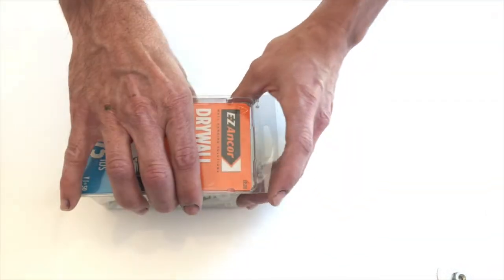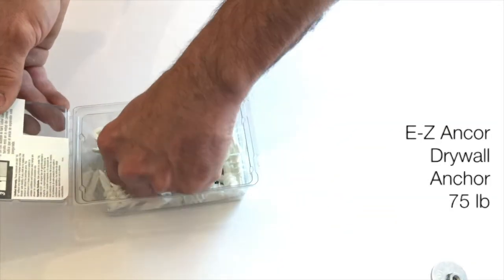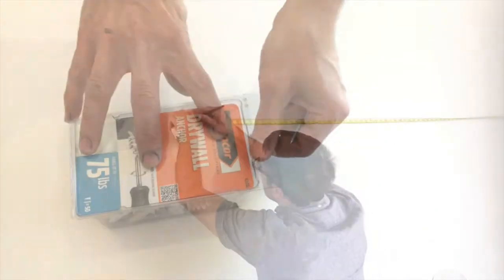We like to use these 75 pound drywall anchors to hang those heavier items weighing up to 25 pounds. It's overkill but we like to be extra safe.